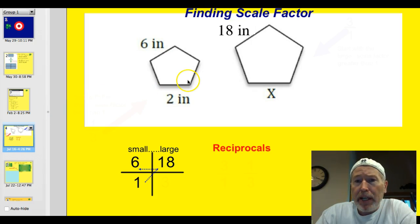Quick review. When finding scale factor, here are two similar shapes. All we need is one side that is in the same corresponding area in order to determine that. So on this pentagon, we're going to use this side, which is 6 inches, and the corresponding side on the larger one is 18 inches.